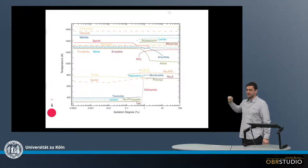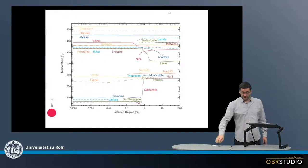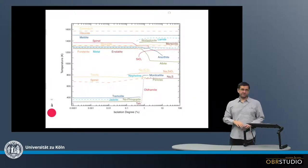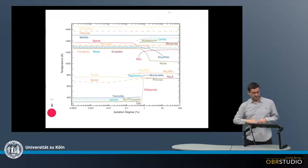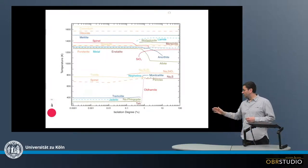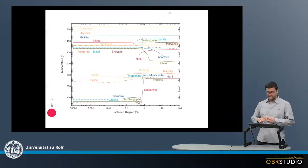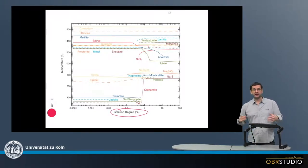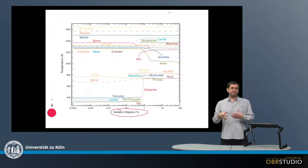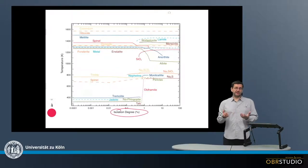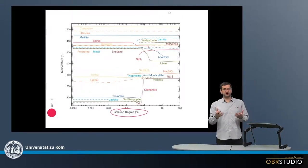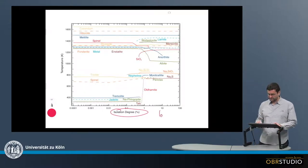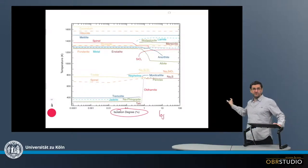And this is what is shown here on this diagram. On the y-axis there is the temperature decreasing from top to bottom. And on the x-axis here there is the isolation degree. And this indicates the amount of material that is not reacting at each temperature step with the surrounding gas. And this is a log scale and increasing here.